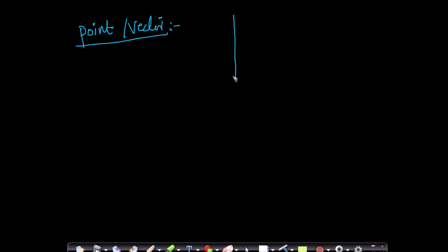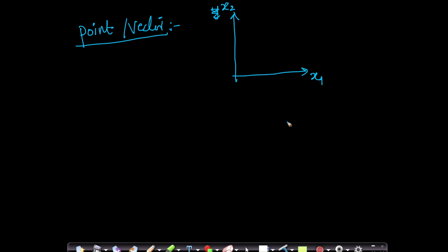Let us assume I have a coordinate system like this. This is my x-axis and this is my y-axis. For generality, instead of saying x-axis and y-axis, I will call this x1-axis and x2-axis going forward. Because if I have 5 axes, I would rather say x1, x2, x3, x4, x5.